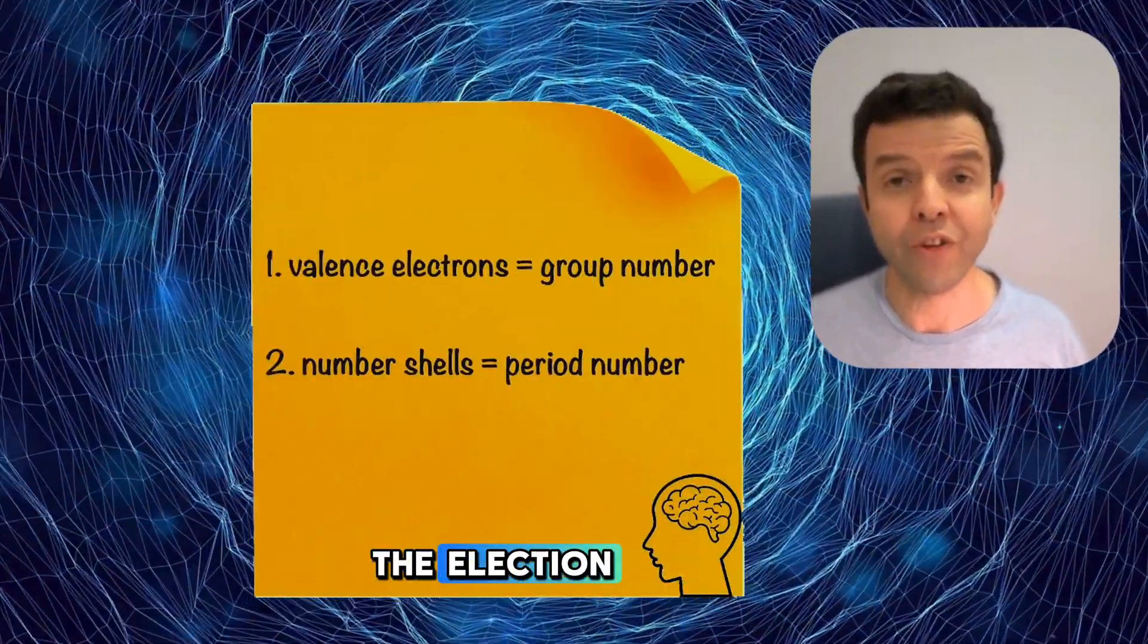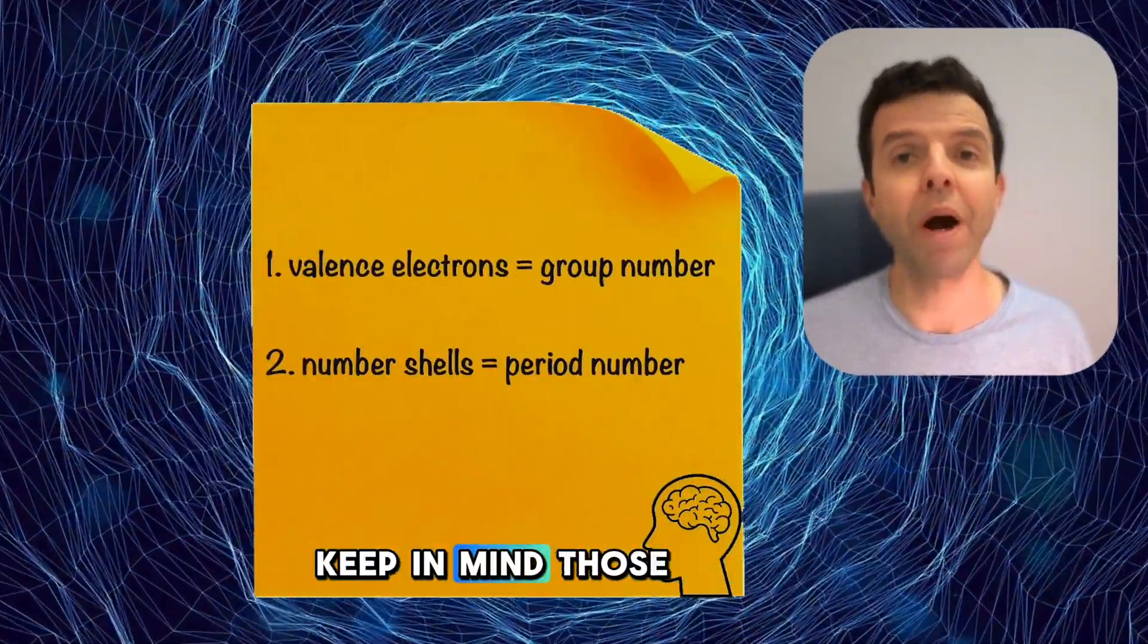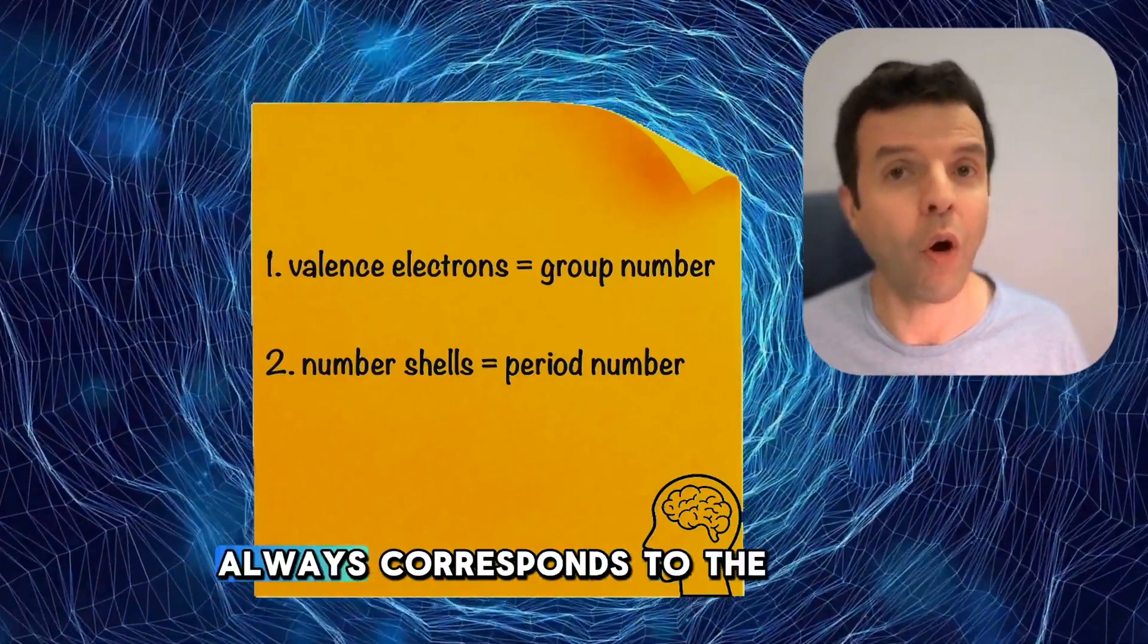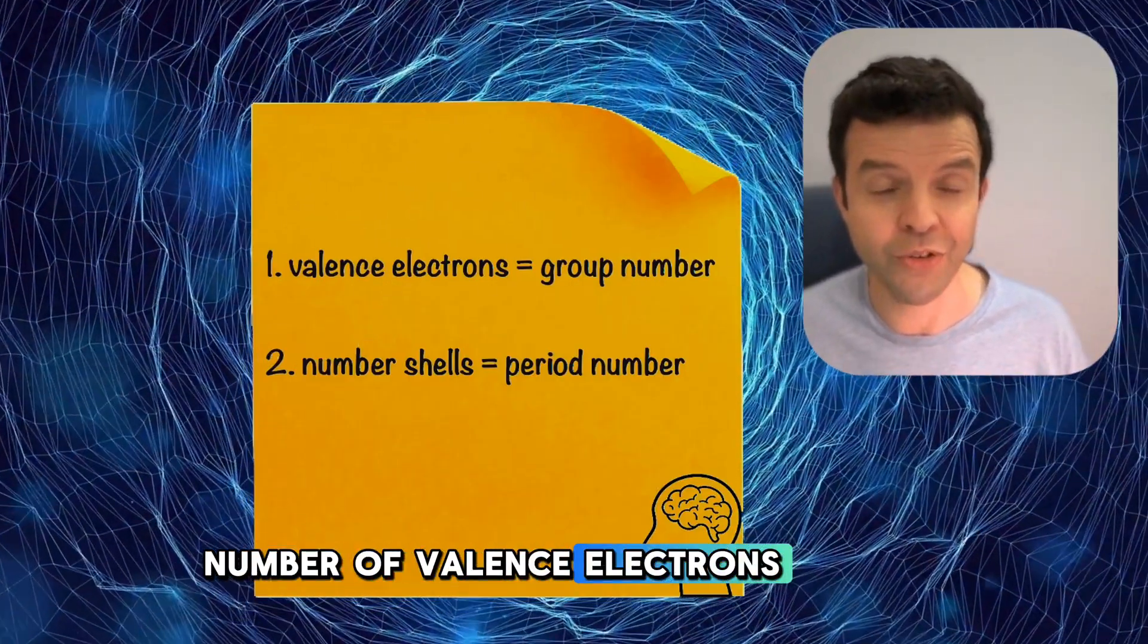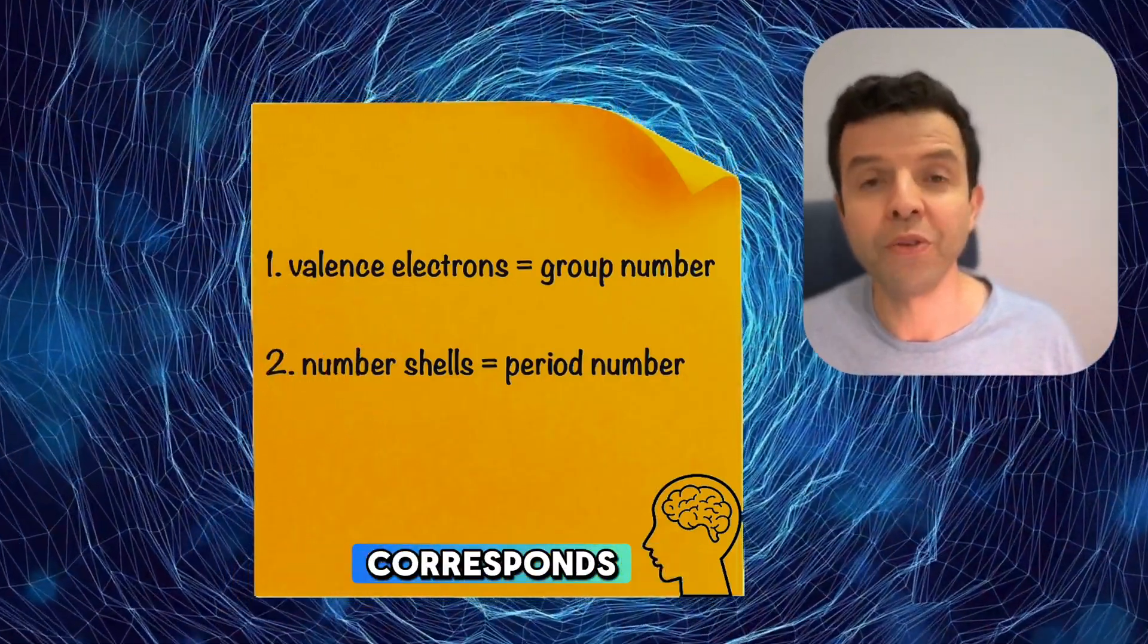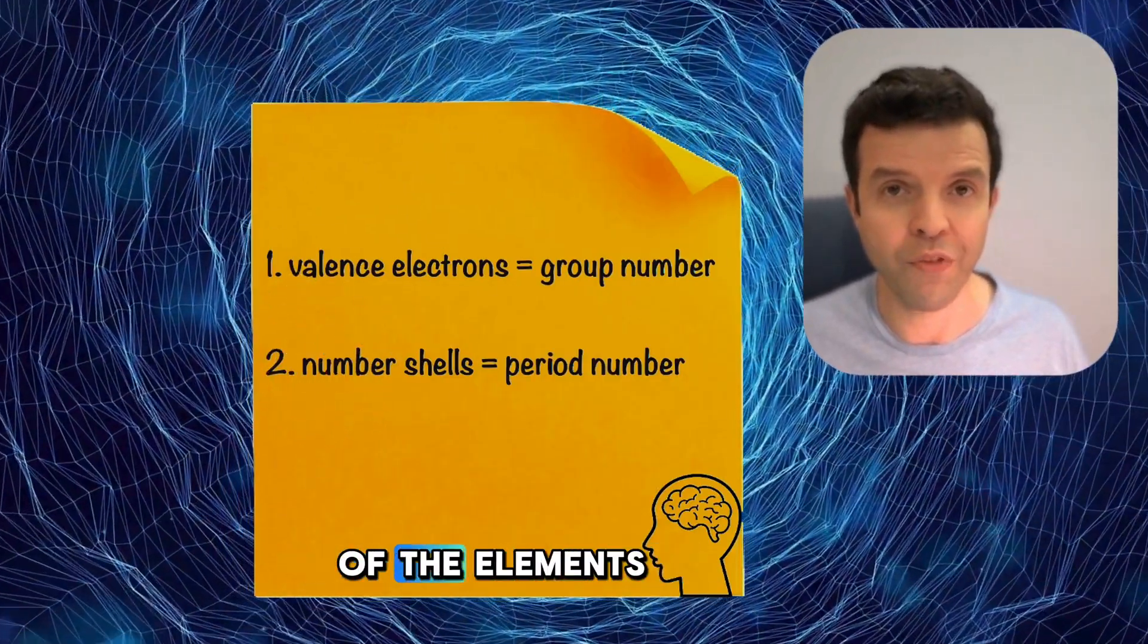Next time you draw the electron configuration of an atom, keep in mind those two rules. First is that the group number always corresponds to the number of valence electrons and second is that the number of shells corresponds to the period number of the element.